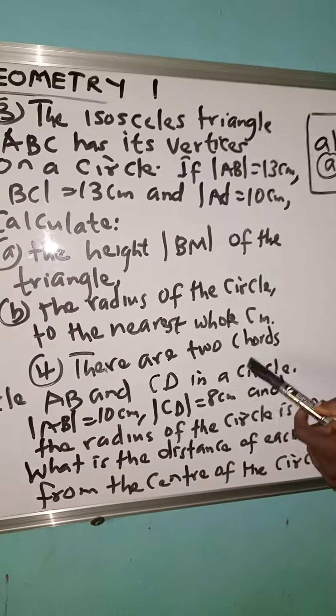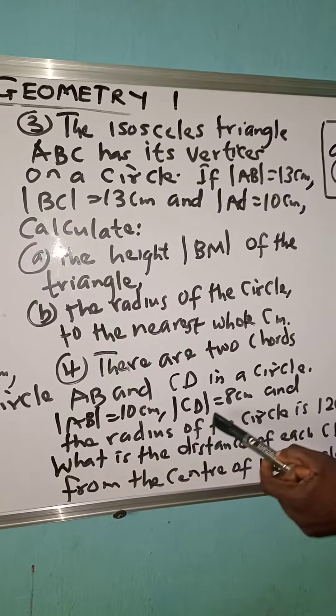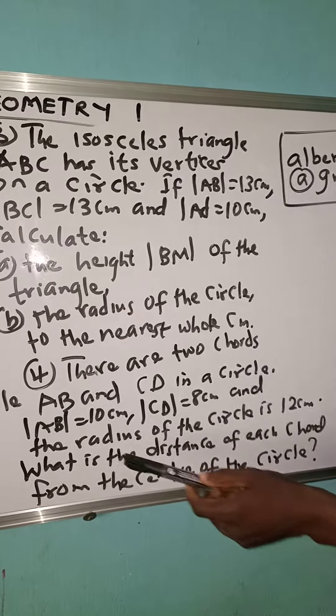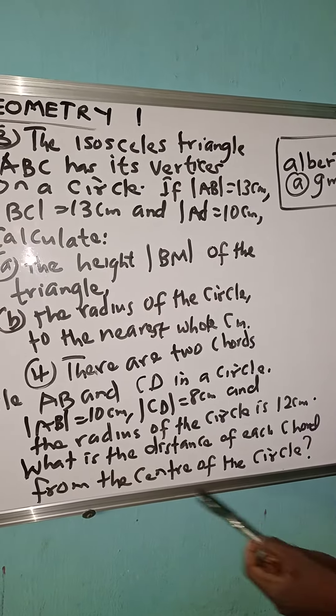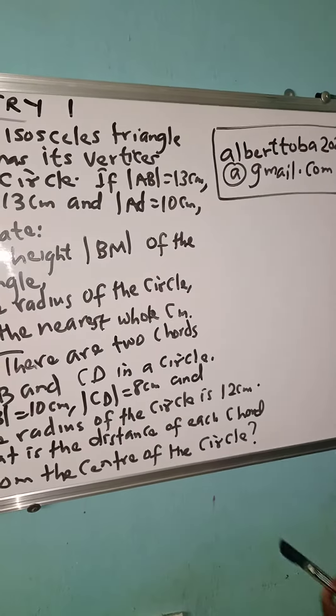Number 4. There are two chords AB and CD in a circle. AB is 10 cm, CD is 8 cm, and the radius of the circle is 12 cm. What is the distance of each chord from the center of the circle?